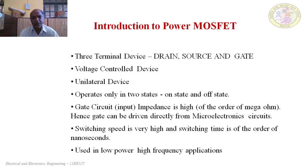This MOSFET is a three-terminal, voltage control device — the output current can be controlled by varying the input voltage. Being a voltage control device, the switching speed can be increased to a higher value, there will not be any input leakage current, losses will be minimum, and power efficiency will be high. This device is also a unipolar device — current flows through the channel because of only one type of carrier, either electrons or holes, unlike a BJT where two types of carriers flow.